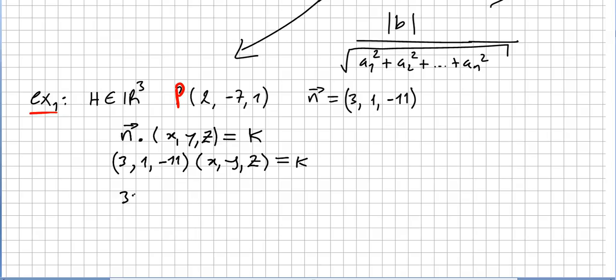So we have 3x + y - 11z equals k. And now we want to force this plane, so we have a plane already, a hyperplane, but we need this point to be in this plane. So we need 3 times 2 plus -7 minus 11 times 1 to be equal to k.